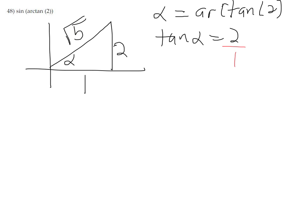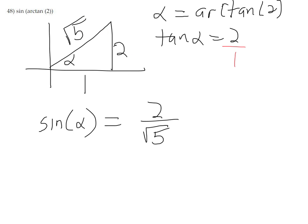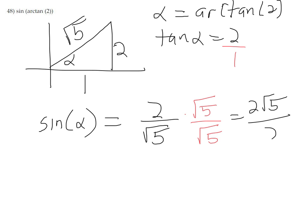We want to find sine of that angle — sine of alpha, where alpha is arc tangent of 2. Sine is opposite 2 over hypotenuse square root of 5. We can rationalize the denominator — sometimes books will require this — to get 2 square root of 5 divided by 5. This completes this question.